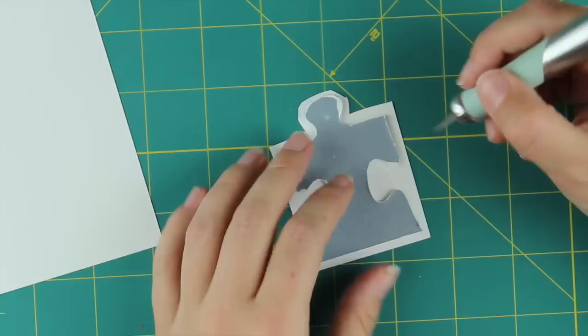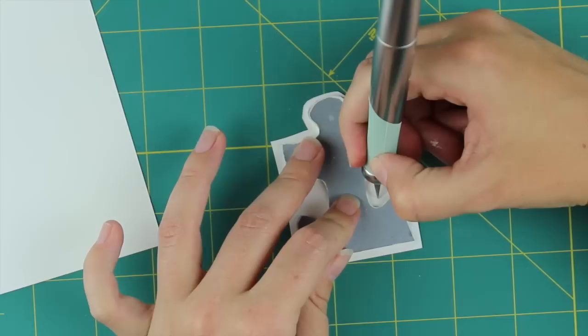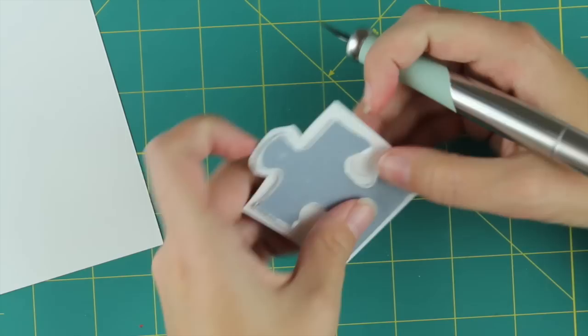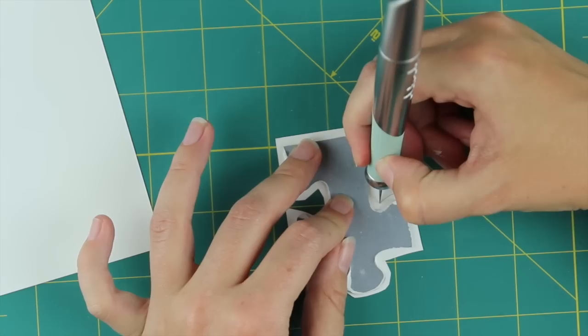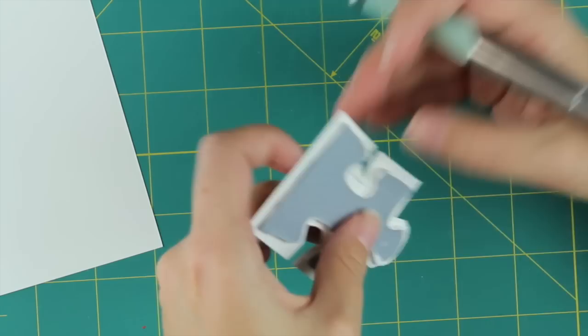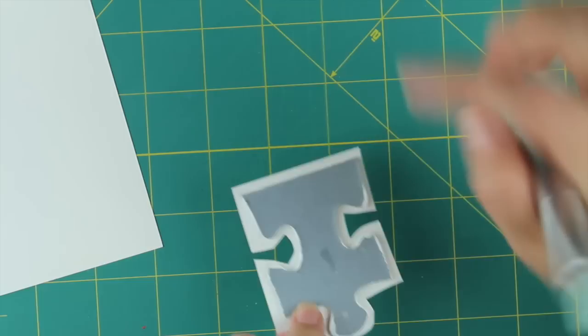And then I just cut out the middle of those pieces. And it doesn't have to be perfect because you're just going to glue the paper down anyway. And this is how it looks when I have cut it out.